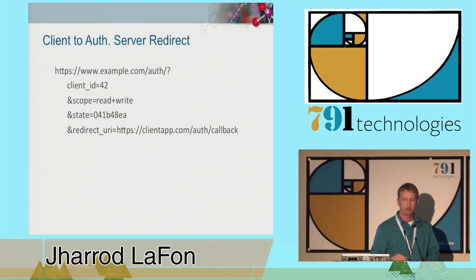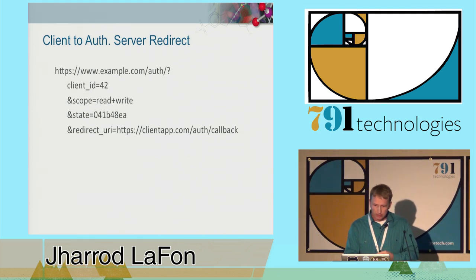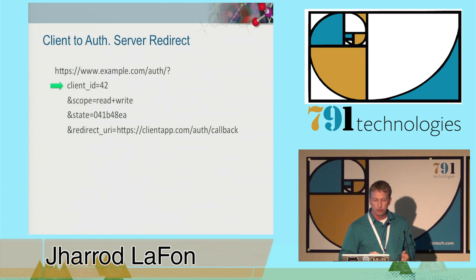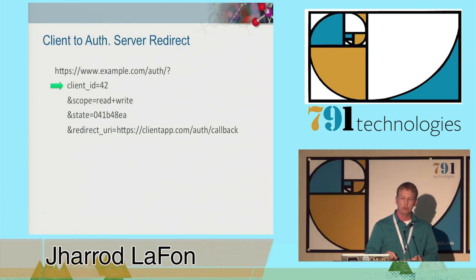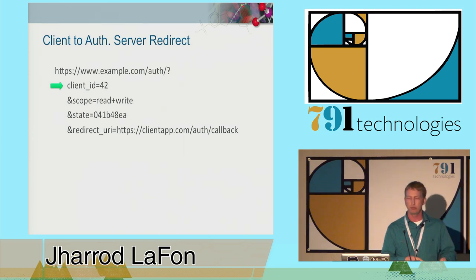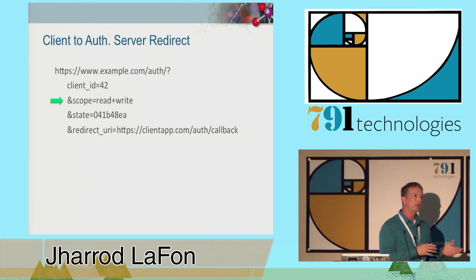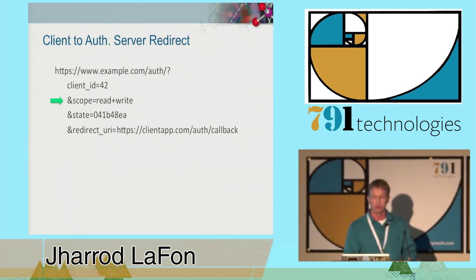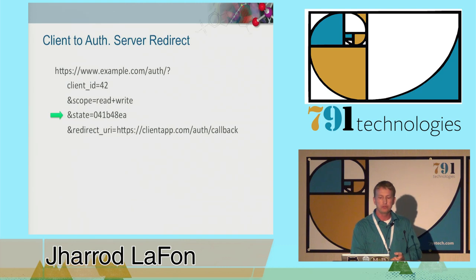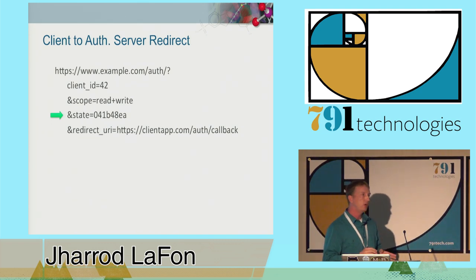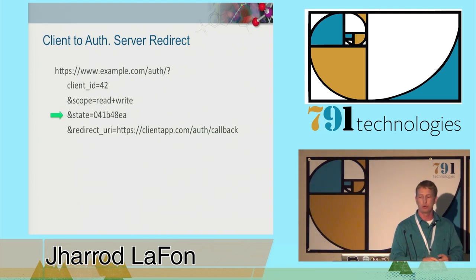That redirect represents the client's request to access data, so a few arguments have to be sent along with it. All the arguments are passed in the query string. The first one is the client ID—the client includes this in every single authorization request so the authorization server can identify that client. The second argument is the scope—literally the scope of the data access being requested—and it should be something meaningful to the authorization server. Next, we have the state parameter, which is an opaque string used to mitigate cross-site request forgery attacks. You should always use this, even though it's an optional parameter according to the spec.